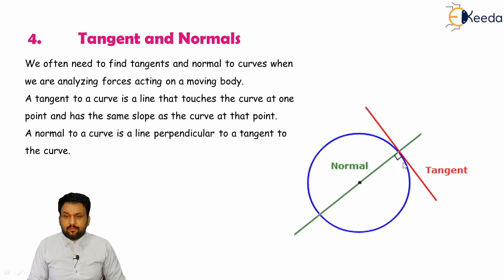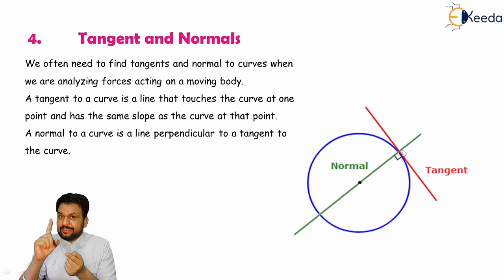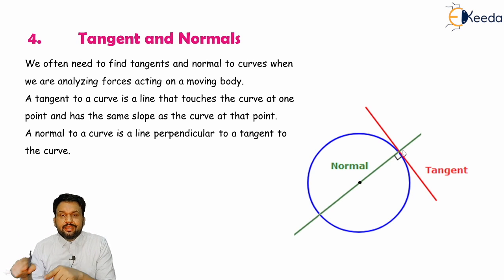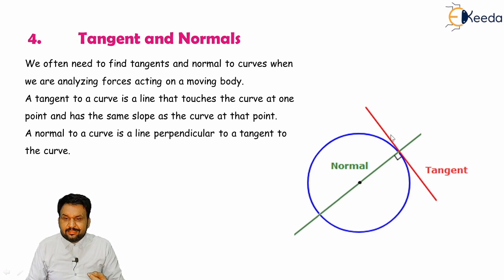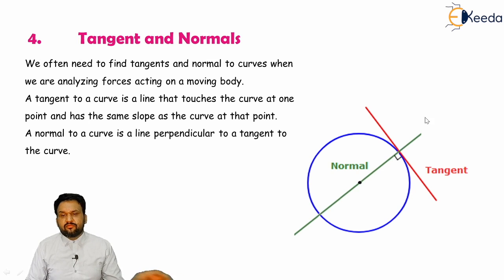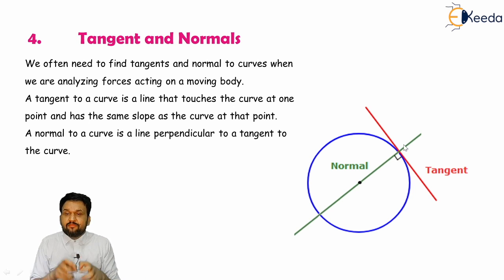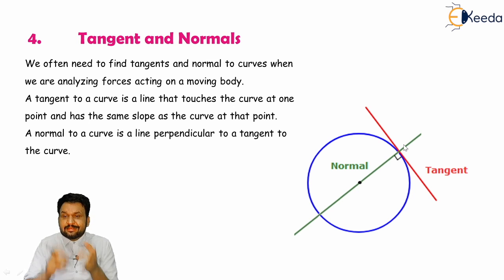Students should be familiar with tangent and normal. If a line is attached to a curve at a single point, a tangent only touches the curve at that one point on the outside — that line is known as the tangent. If you draw another line perpendicular to the tangent, it is known as the normal. The red line shown is the tangent and the green line is the normal. The normal can pass through the curve, but the tangent only touches it at one point and does not cross.